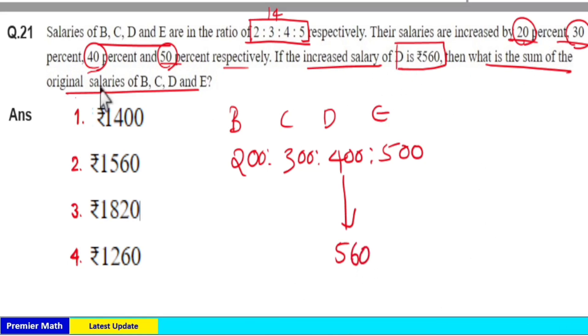Here D's increment is equal to 40%. So if you take 40% increment from this 400, 10% of 400 is 40, then 40% is 160. So 400 plus 160 is equal to 560.